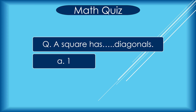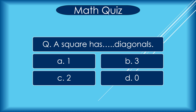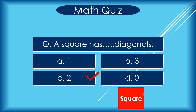A square has how many diagonals? A 1, B 3, C 2, D 0. Correct answer is C 2. Draw a straight sliding line to this point, and to this point — that makes a diagonal. So 1, 2. A square has 2 diagonals.